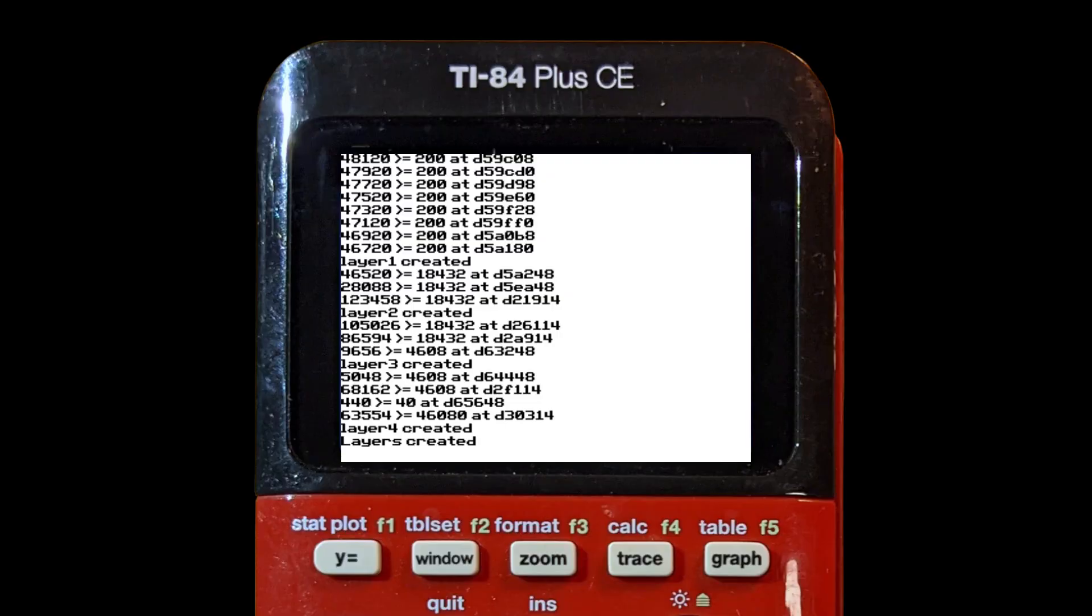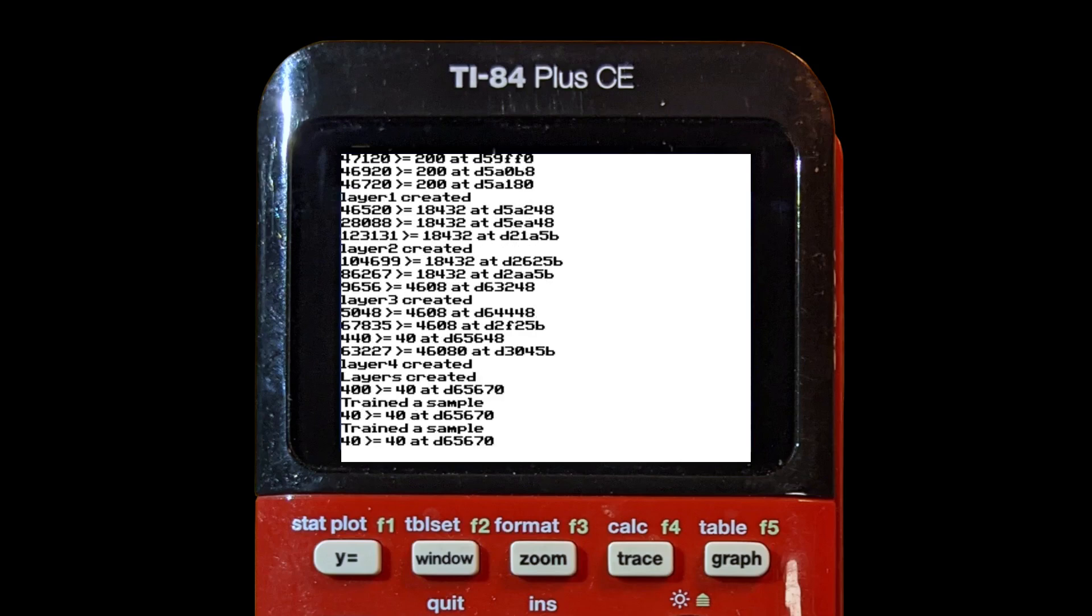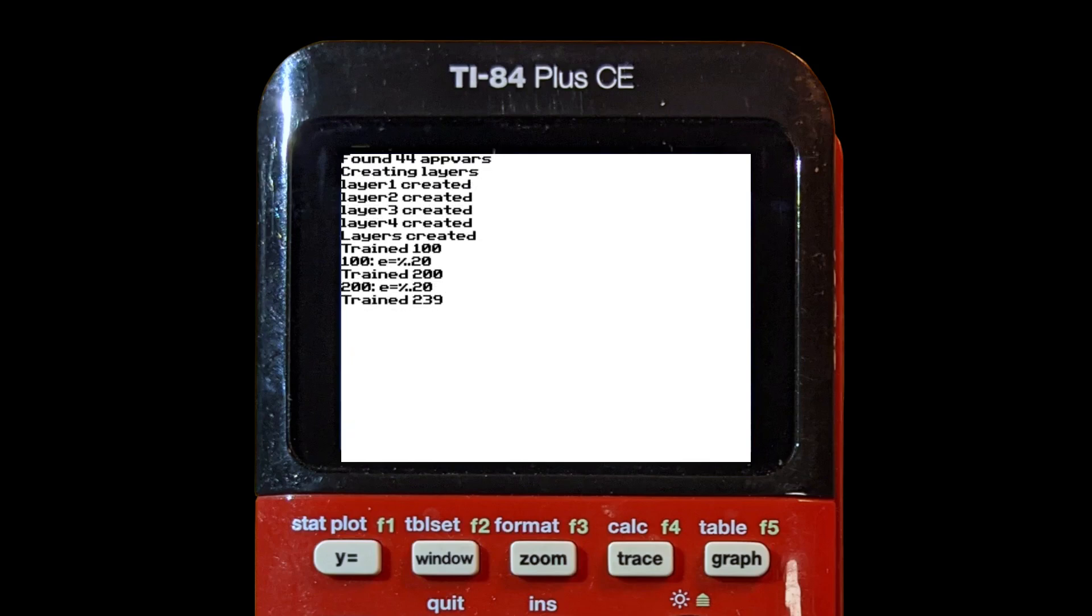I proved that training the network worked on the calculator, but because it takes around 79 seconds to feed forward and back-propagate each sample, I instead trained the network on a computer and transferred the trained weights to the calculator.